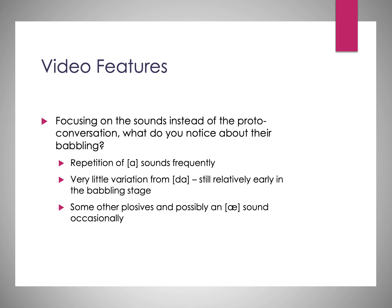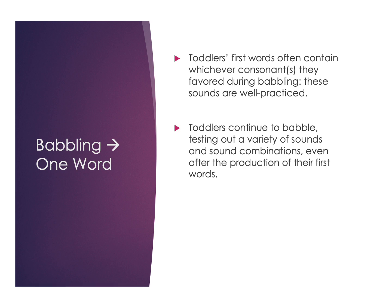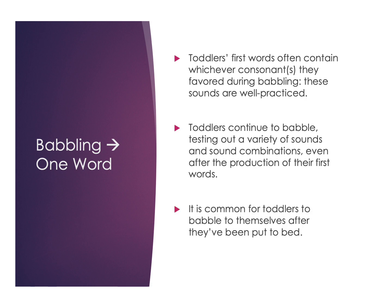Babbling will help lead into that first word stage. A toddler's first word will often contain whatever consonants and vowels were most favored during babbling — these are their most well-practiced sounds, the ones they've mastered best and that their motor control has the most control over. It's very common for them to continue to babble and test out sound combinations even after they've started producing their first words — babbling doesn't just suddenly end. They'll often babble and test out new sounds at bedtime as they're falling asleep, continuing to practice that different aspect of motor control.